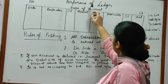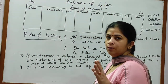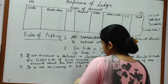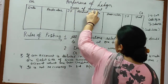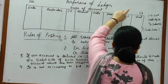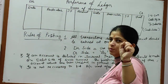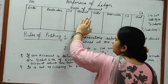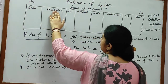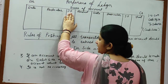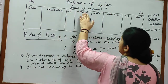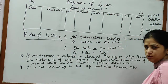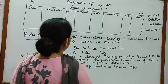Now the proforma of the Ledger. How we will open our account — name of account at the top. It has a T-shape: debit side on the left and credit side on the right. On the debit side: date, particular, journal folio number — which page of the journal this entry is on — and amount. Credit side again: date, particular, journal folio number, amount. This is the proforma of the Ledger.